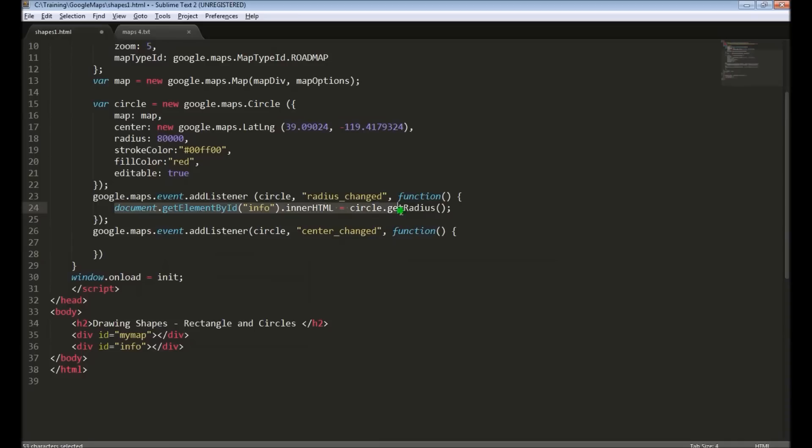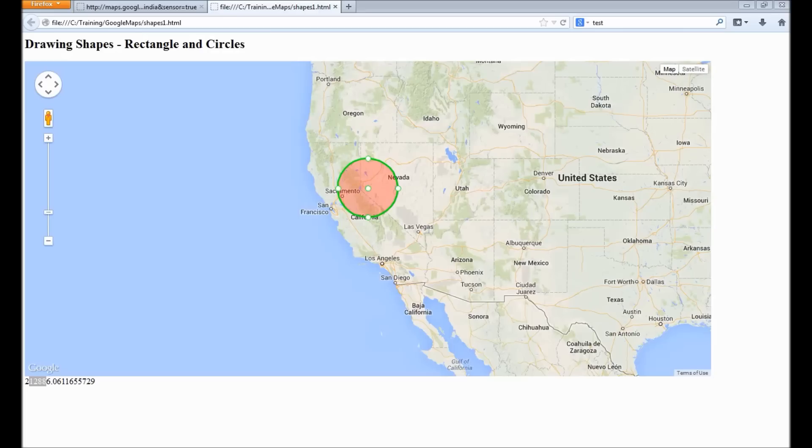And similar to this I will display the new center information in the info div. Reload. When I move the circle, you can see the new coordinates of the center circle changing in the info div. You can move it around.